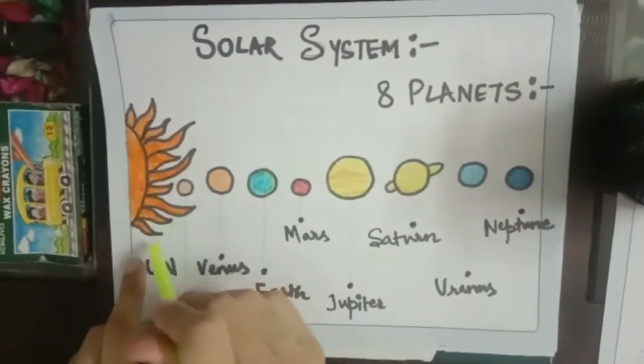Hey kids, hi! Today we are going to learn about our solar system in which we have eight planets. And all the eight planets revolve around sun.